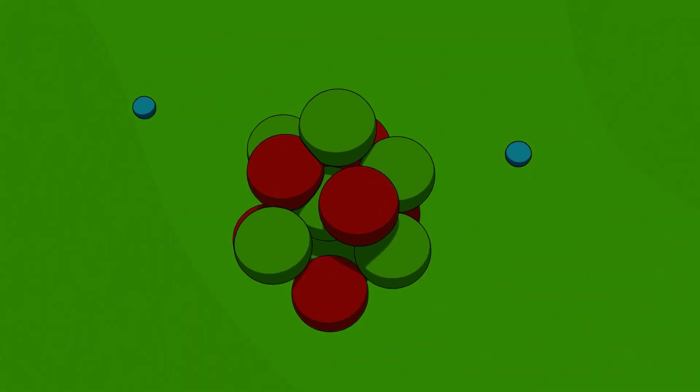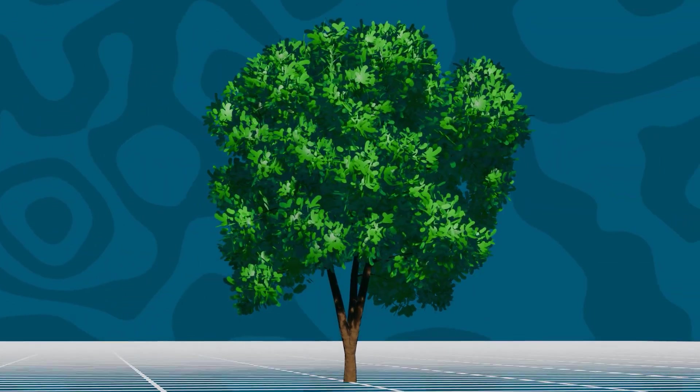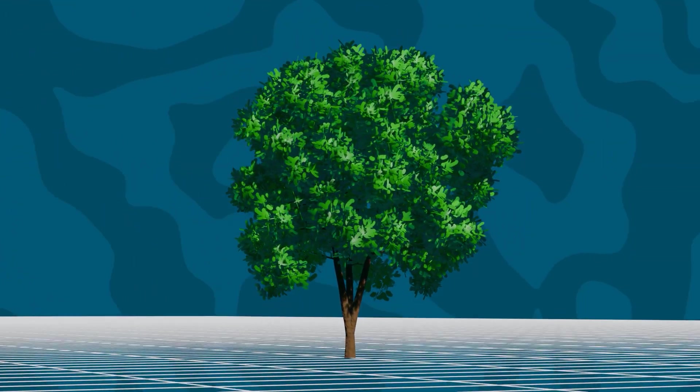But do you know how many atoms it has exactly, and what each of those atoms is doing at a given moment in time? And with the little that you do know about the tree, how do you know what you know?